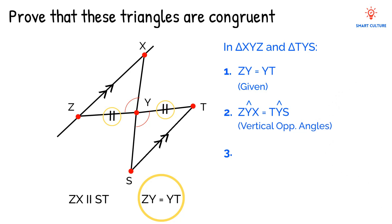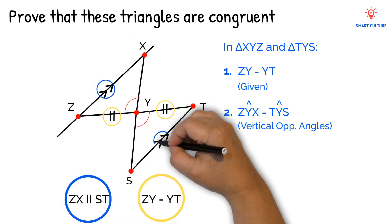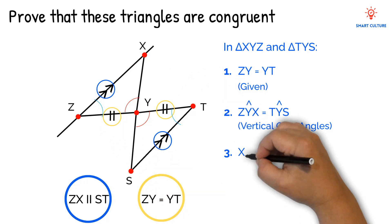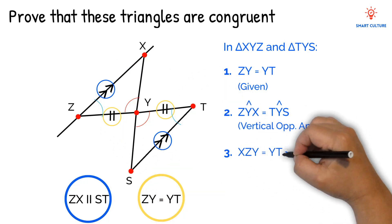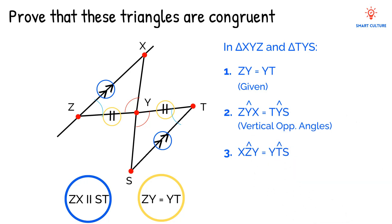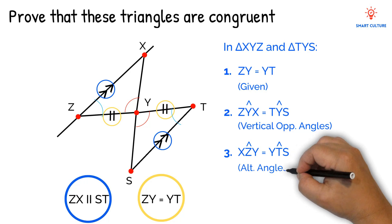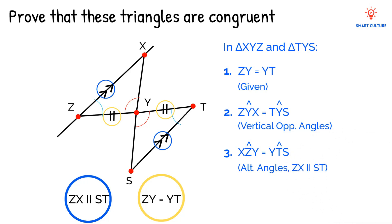We need one more statement to prove that these triangles are congruent. What else do you notice? We have parallel lines. Therefore, we can say that angle XZY equals angle YTS. And the reason? Alternate angles because ZX is parallel to ST.